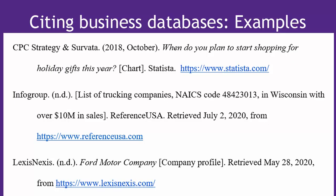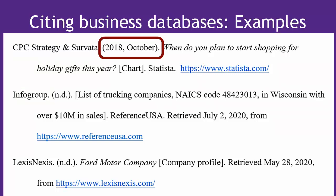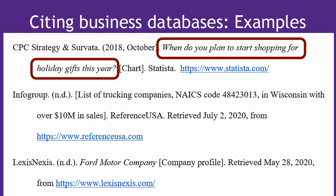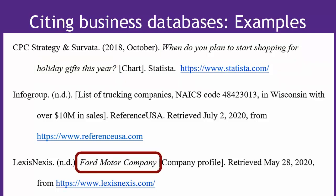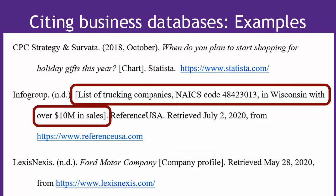Here are a few more complete citations of business resources. You can have either one or several individual or corporate group authors. Include as much of the date as you are given, or N.D. for no date if necessary. Italicize the titles of the content and only capitalize the first word and proper nouns — Ford Motor Company is only capitalized because it's the company's proper name. These are all unusual types of information, so they all get some sort of bracketed description. For the Reference USA example, there really is no title because we created a list in real time and downloaded it as an Excel file. So in the square brackets, we are allowed to basically make up a title — describe what data you retrieved so somebody else could do the same search. Putting it in square brackets shows that it's not really a formal title.